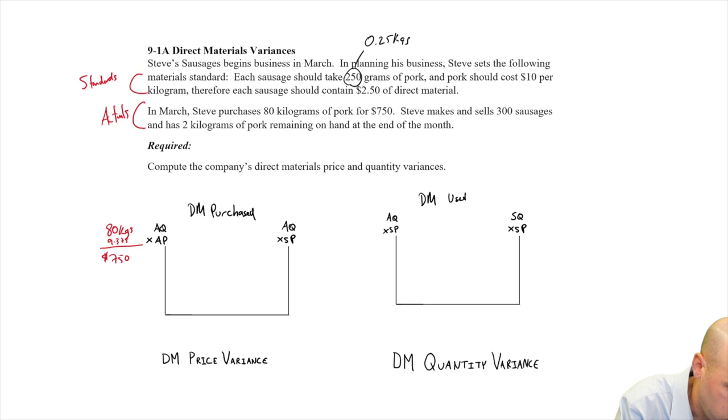Okay, that was our actual price. Now let's move over to actual quantity times standard price. Our actual quantity remains 80 kilograms. What was our standard price per kilogram? Our standard price per kilogram, the amount this person expects to pay per kilogram, is $10 per kilogram.